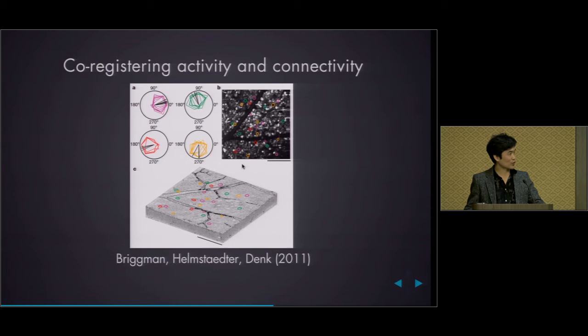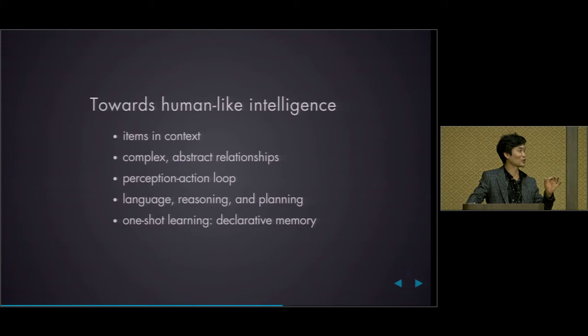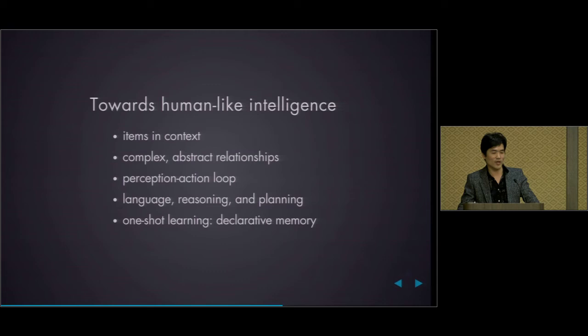What's after the retina? The retina is a beachhead — people always said connectomics is good for flies and worms but will never work for interesting stuff. The retina is the first place where it's been shown that connectomics can yield results in the mammalian CNS. The next challenge is moving toward the cortex. It's not just perception we want to address — the challenge is to address cortical properties related to human-like intelligence: processing items in context, complex abstract relationships, the perception-action loop, language, reasoning, planning, one-shot learning, and declarative memory capabilities. That's part of why I recently moved to Princeton, surrounded by people studying these issues in mice.